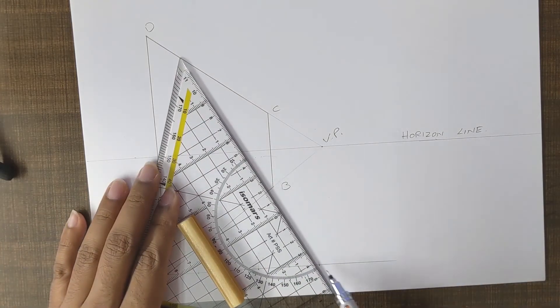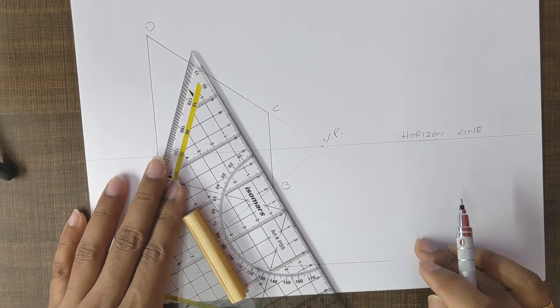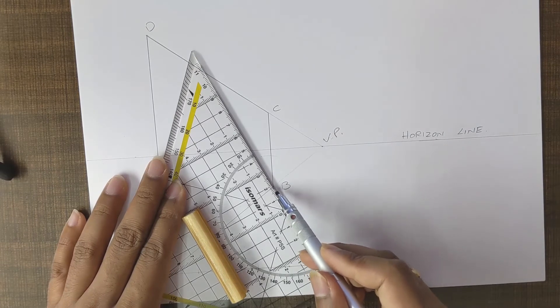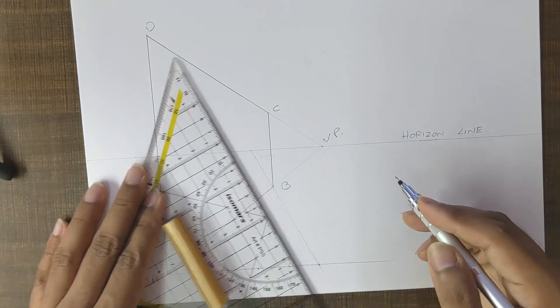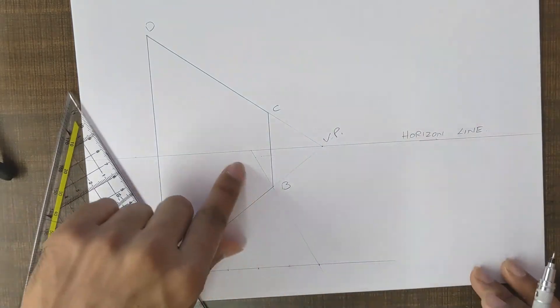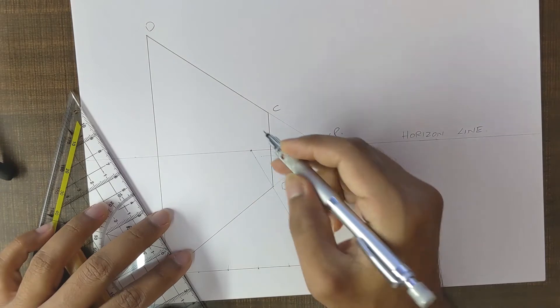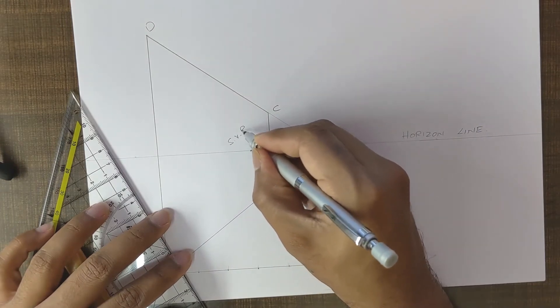So take the last point and try to go along point B to the horizon line, and this line is intersecting the horizon line at a point called the special vanishing point.